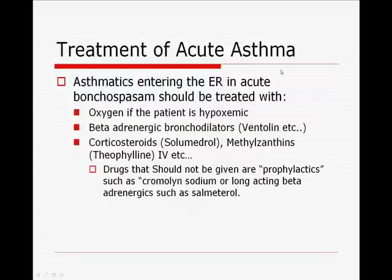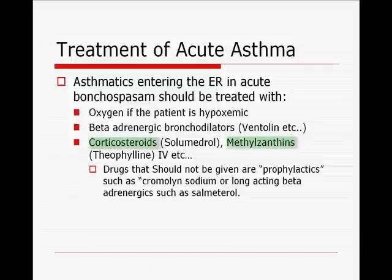Treatment of acute asthma: asthmatics entering the emergency room typically need to be treated for bronchospasm. However, those individuals could also present with hypoxemia, so in addition to treating the bronchospasm, you may need to treat the hypoxemia and put them on supplemental oxygen. It would not be acceptable for a young asthmatic to have a PO2 in the low 50s on room air, so you wouldn't want to just give them a bronchodilator — you'd want to give them oxygen as well. You could treat them with beta-adrenergic bronchodilators such as albuterol.